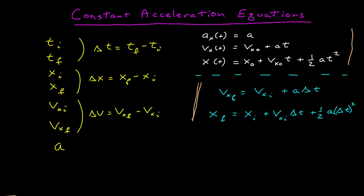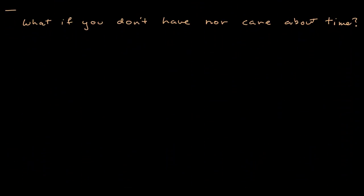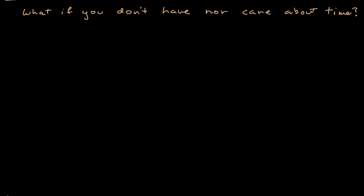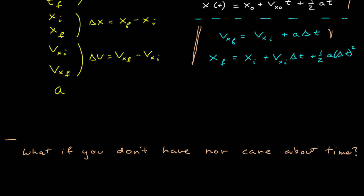I've summarized where we are. There isn't any new information to add. However, we can use these two equations to derive two others that can be useful in certain situations. The first question to ask is: what if you don't have, nor care about, time? Let's solve the first equation for the time interval, and then substitute it into the second one.